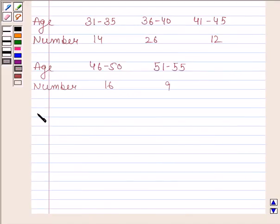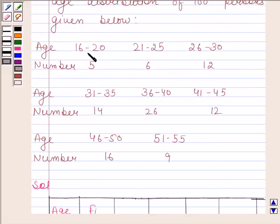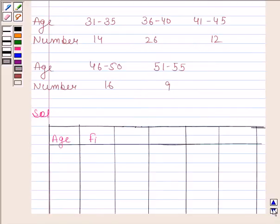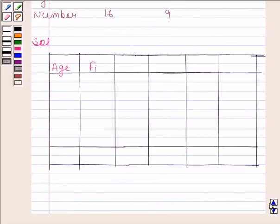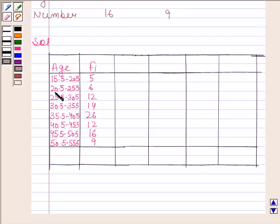With the solution, we will first make a table. Now, as the class intervals are 16 to 20, 21 to 25, and so on, we will first convert this into a continuous frequency distribution by subtracting 0.5 from the lower limit and adding 0.5 to the upper limit of each class interval. After doing this, we get class intervals as 15.5 to 20.5, 20.5 to 25.5, and so on.